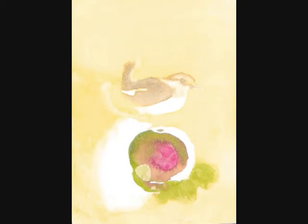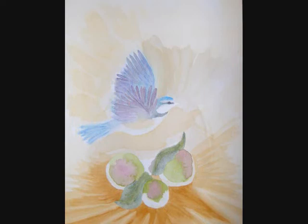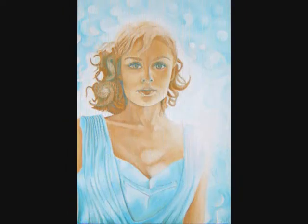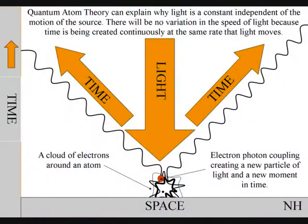This can explain why light is so beautiful when it strikes an object. It is because we are looking at a moment of pure creation of time and space. It can also explain why light is a constant, independent of the motion of the source.